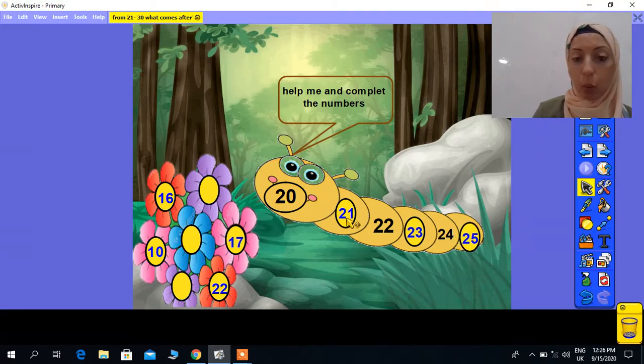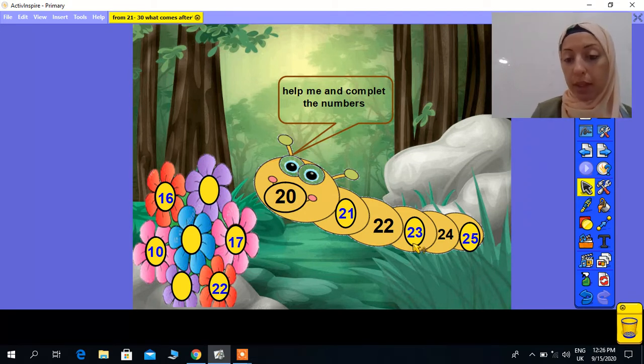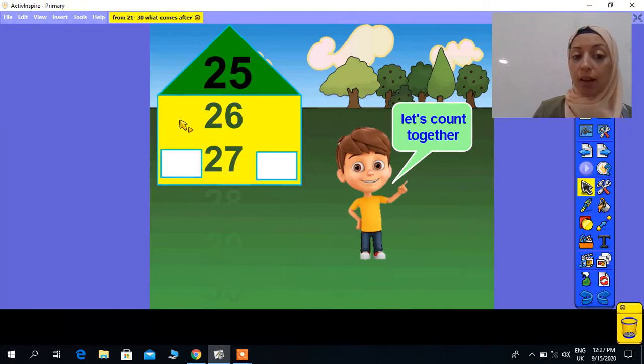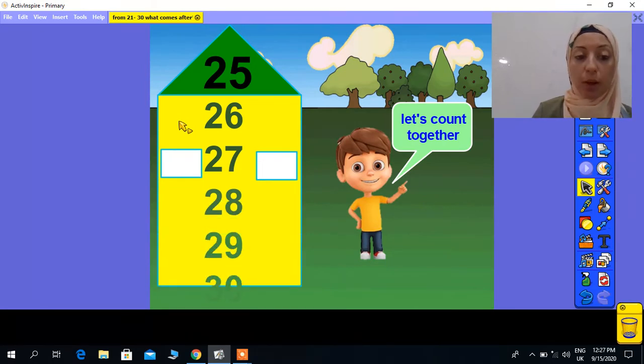20, 21, 22, 23, 24, 25. After 25, instead of 5 I put 6, so 26 comes after 25. So 25, 26, 27, 28, 29, and 30.